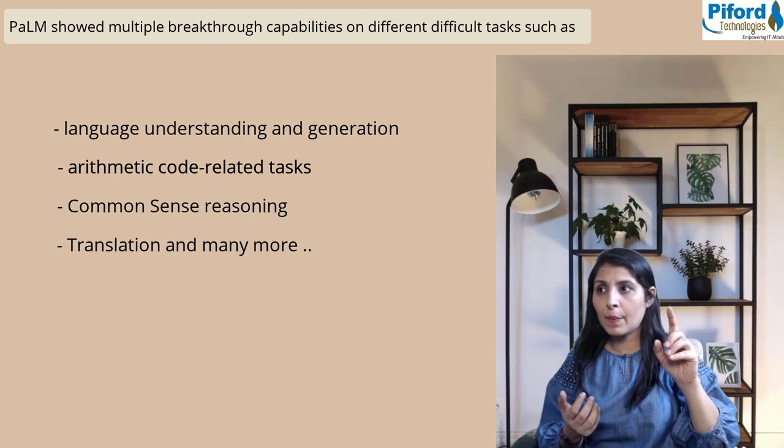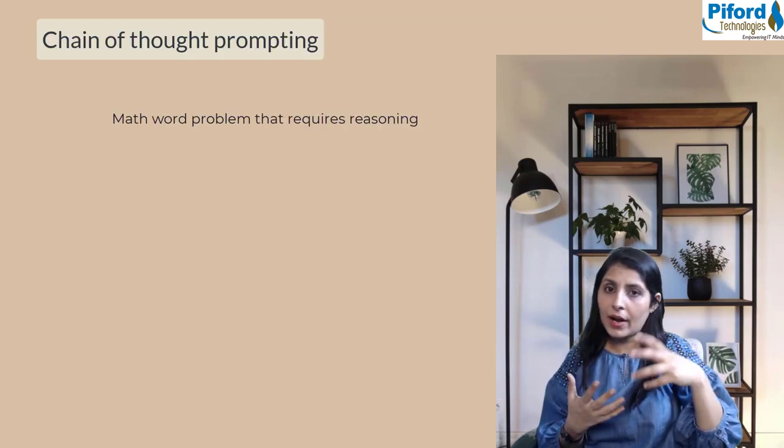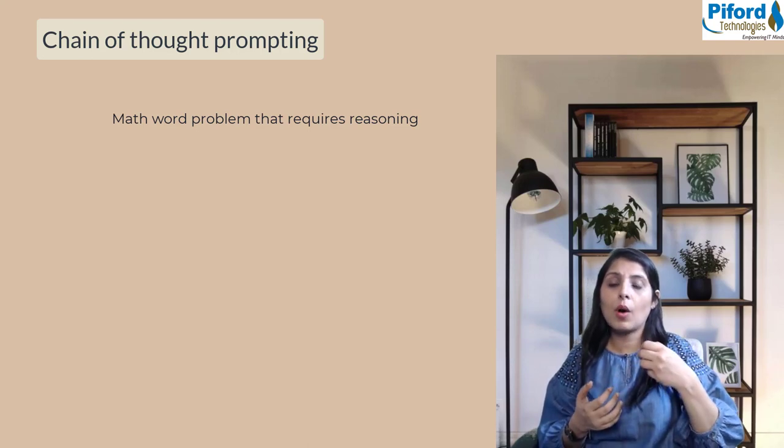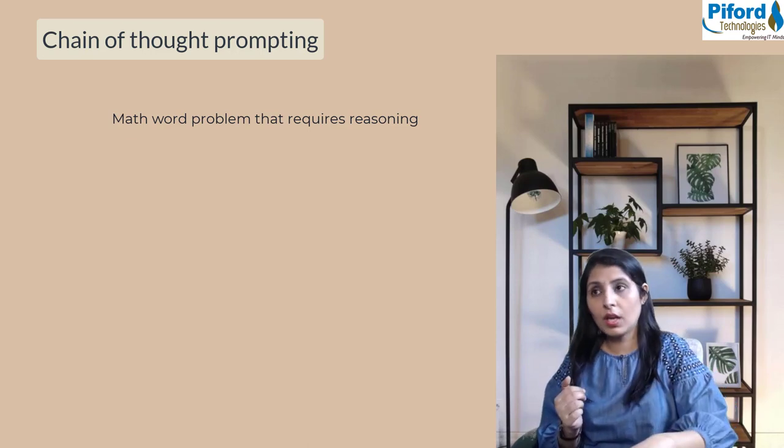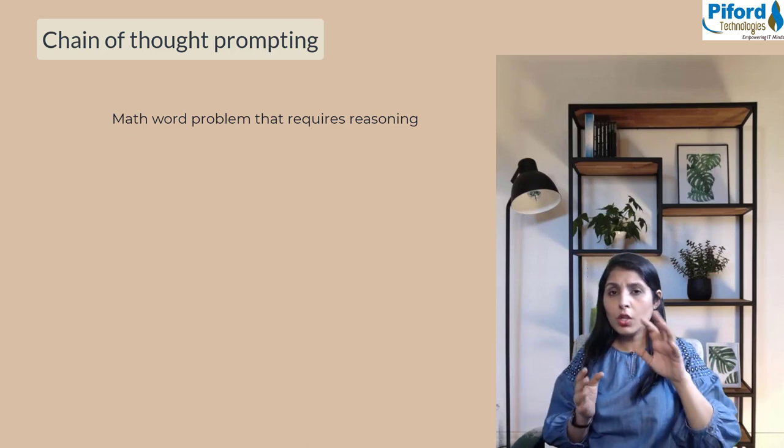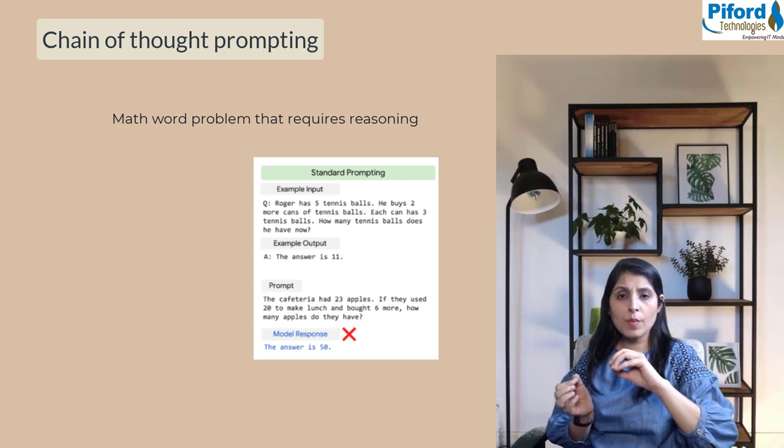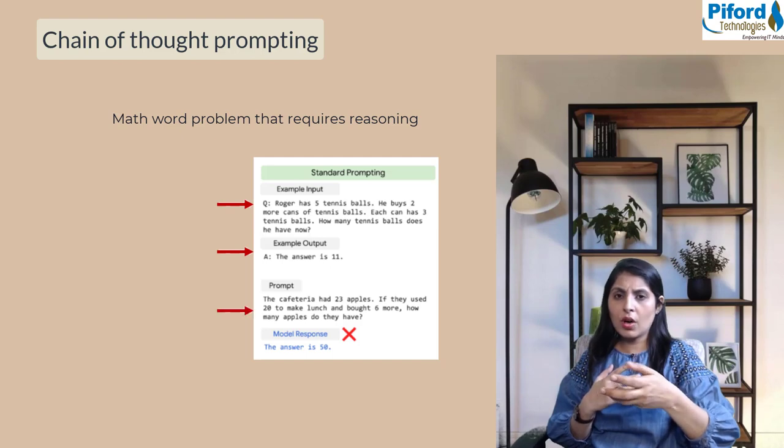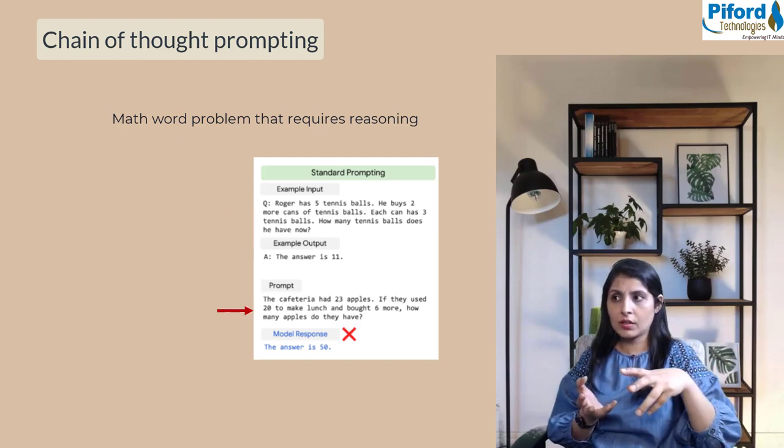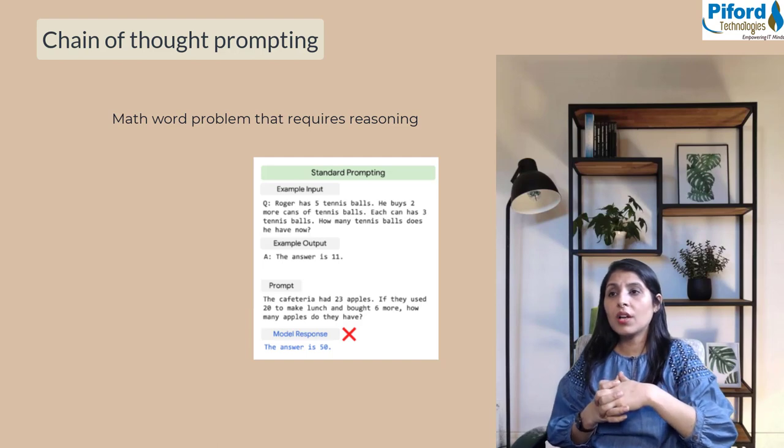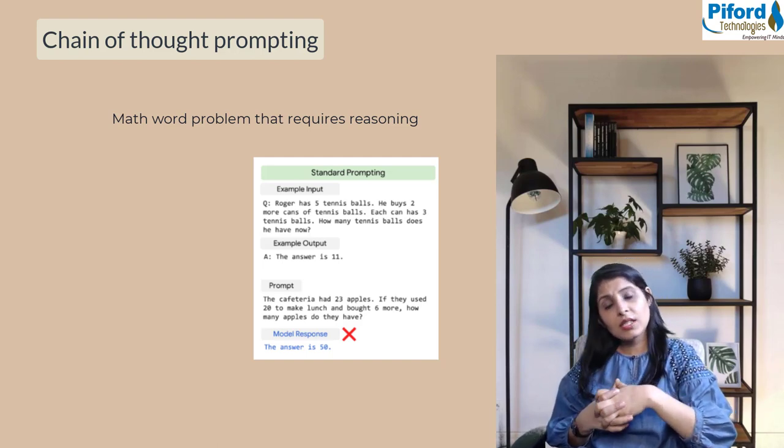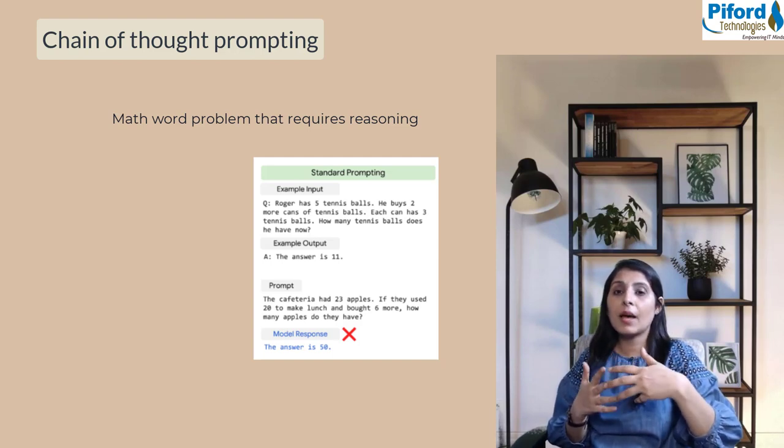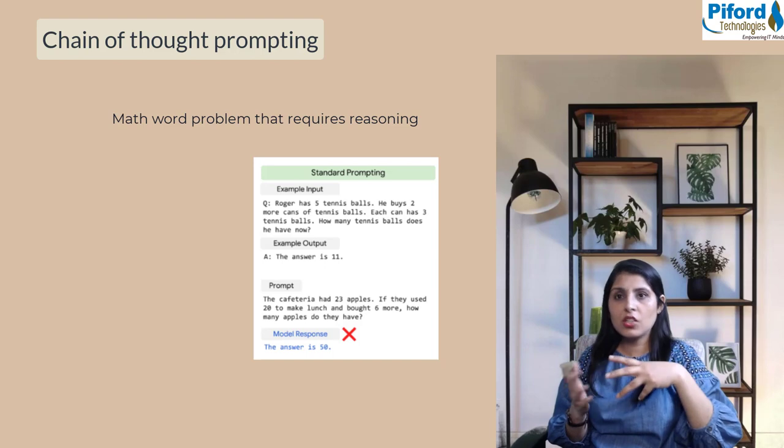Let's understand chain of thought prompting. For that, let's take an example of a math word problem that requires reasoning and see how PaLM handles this with chain of thought prompting. Normally, if we prompt a model with a question and answer, then ask a question, the model gives us an answer. You can see the answer the model gave is incorrect.